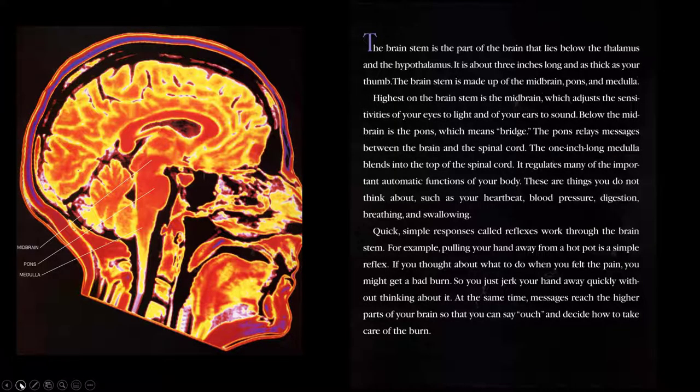The brain stem is the part of the brain that lies below the thalamus and the hypothalamus. It is about three inches long and as thick as your thumb. The brain stem is made up of the midbrain, pons, and medulla. Highest on the brain stem is the midbrain, which adjusts the sensitivities of your eyes to light and of your ears to sound. Below the midbrain is the pons, which means bridge. The pons relays messages between the brain and the spinal cord. The one-inch-long medulla blends into the top of the spinal cord. It regulates many of the important automatic functions of your body. These are things you do not think about, such as your heartbeat, your blood pressure, digestion, breathing, and swallowing.